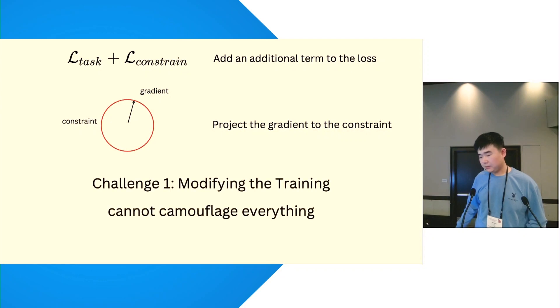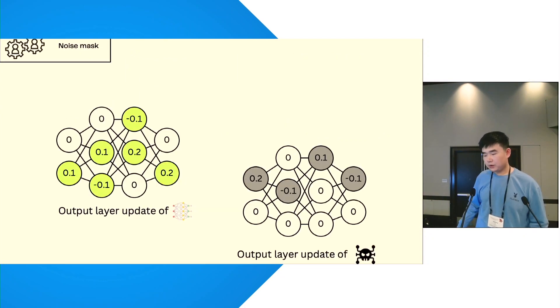However, our concern is that modifying the training cannot camouflage everything. One problem remained by the training is the over-concentrated neuron updates in Backdoor Model.